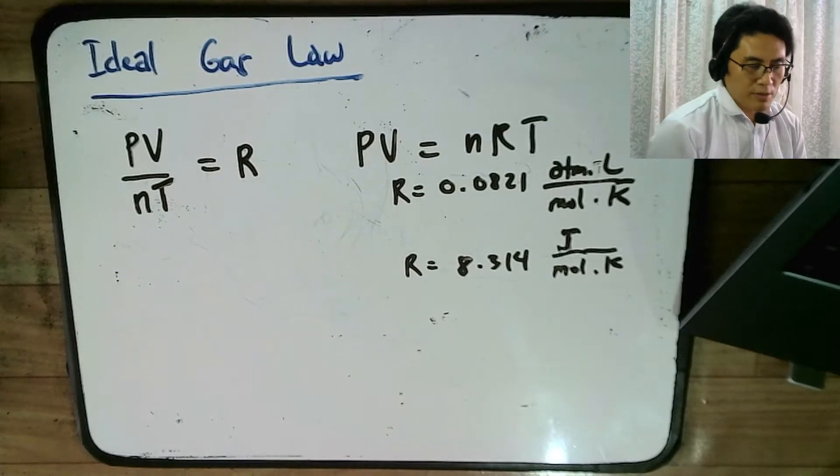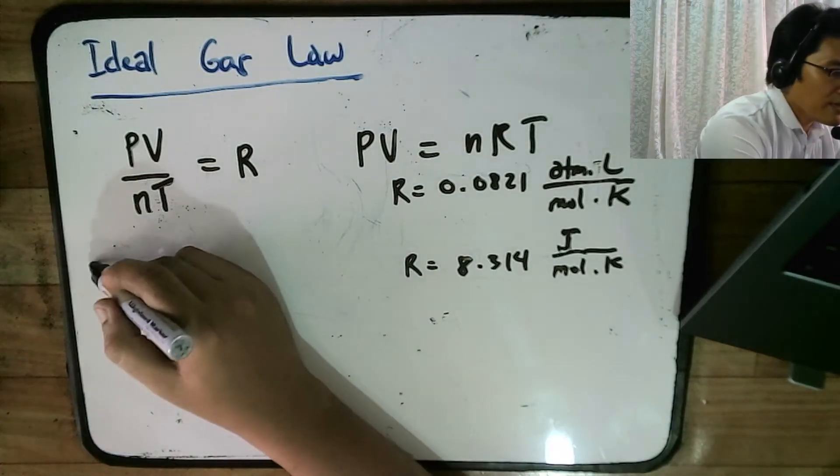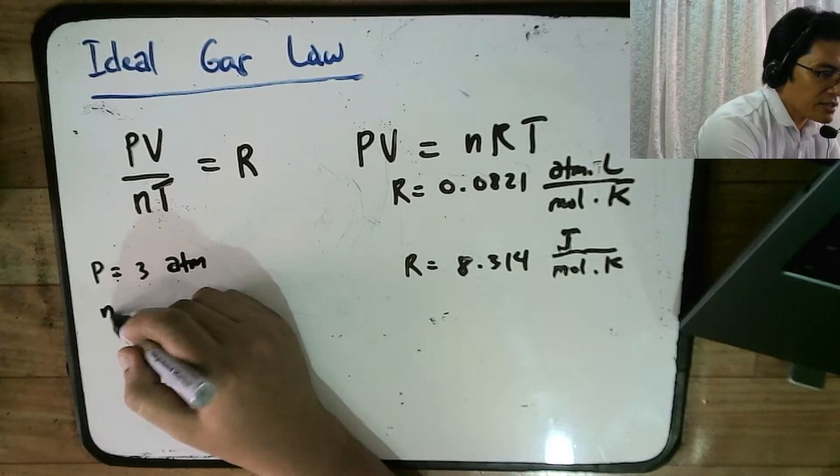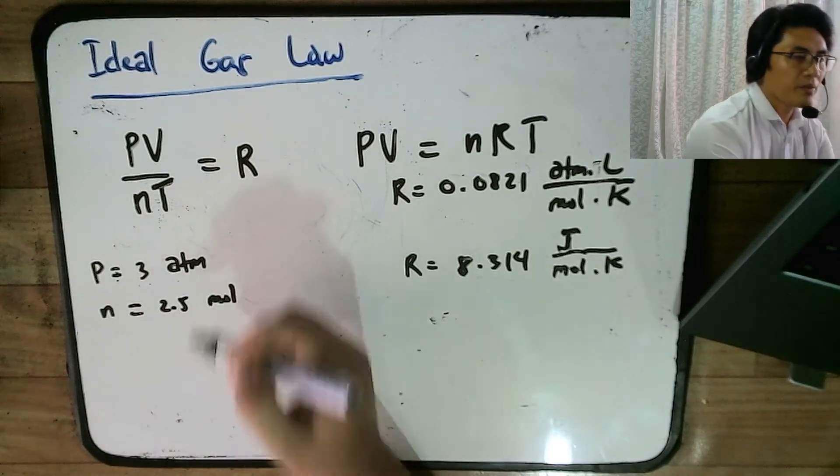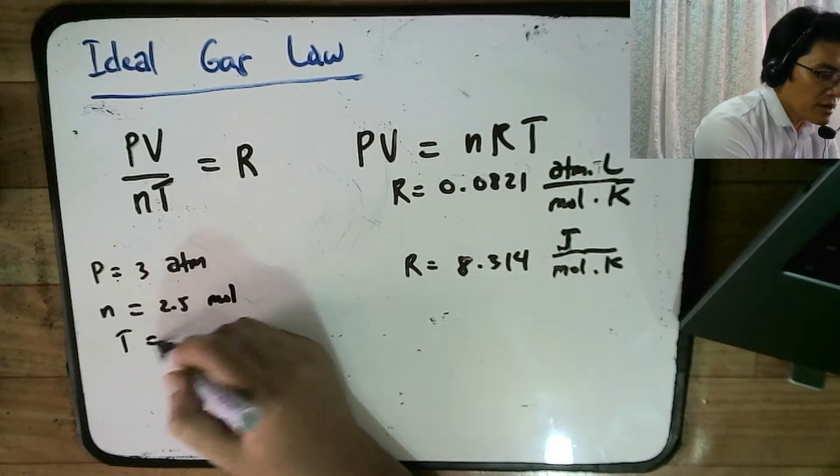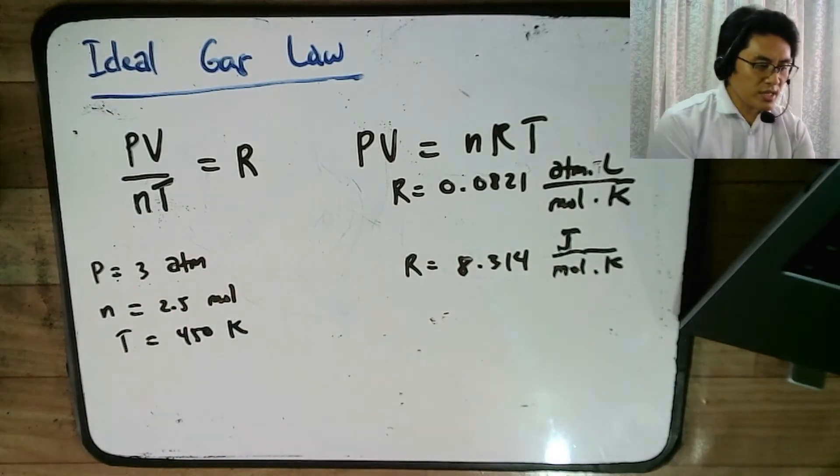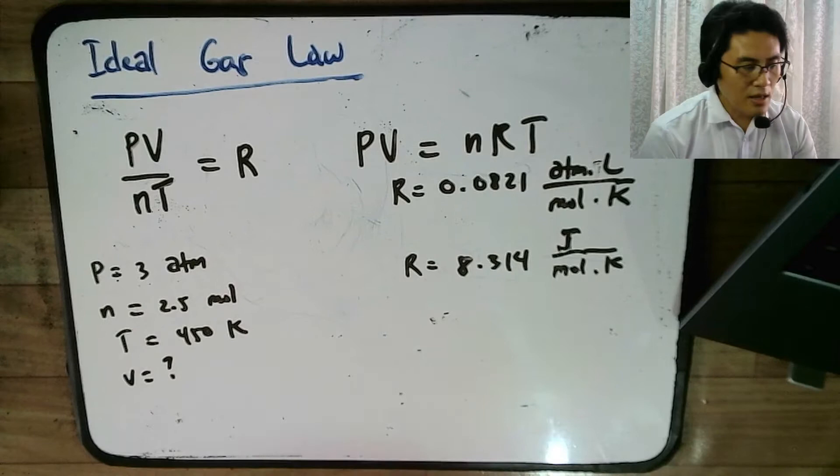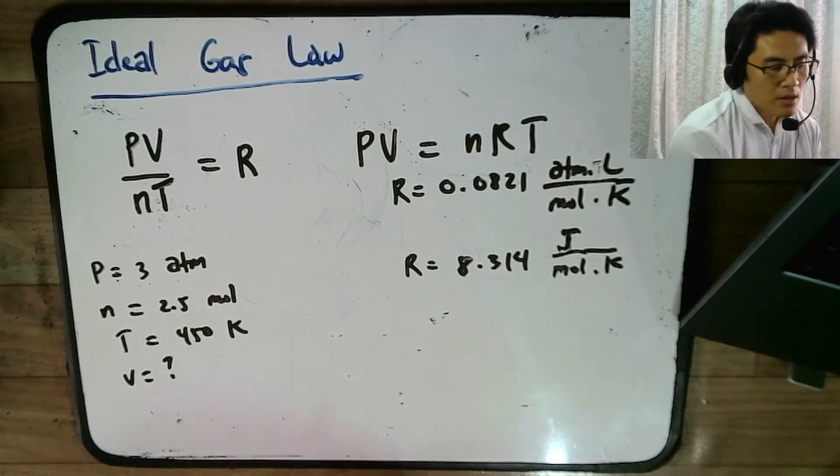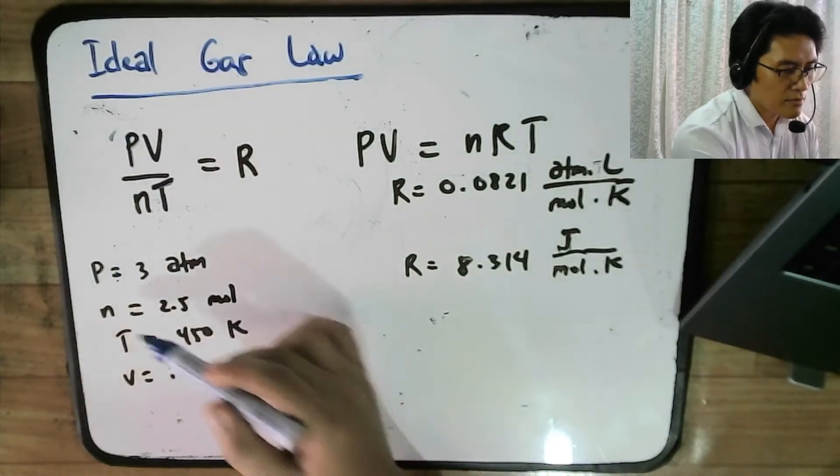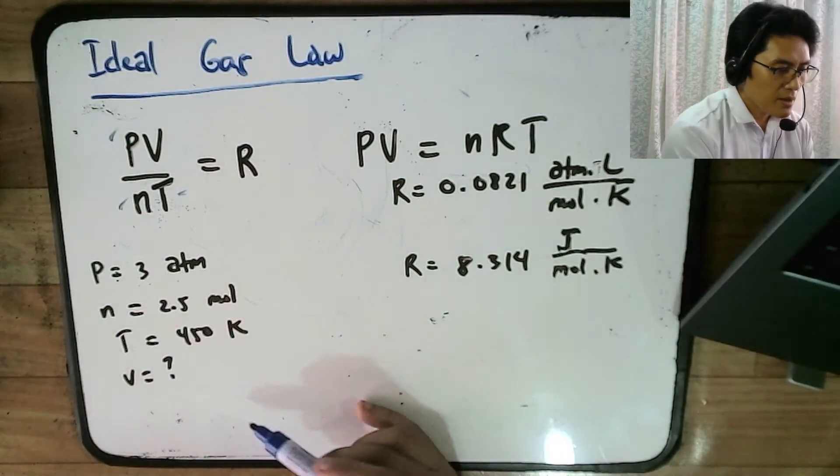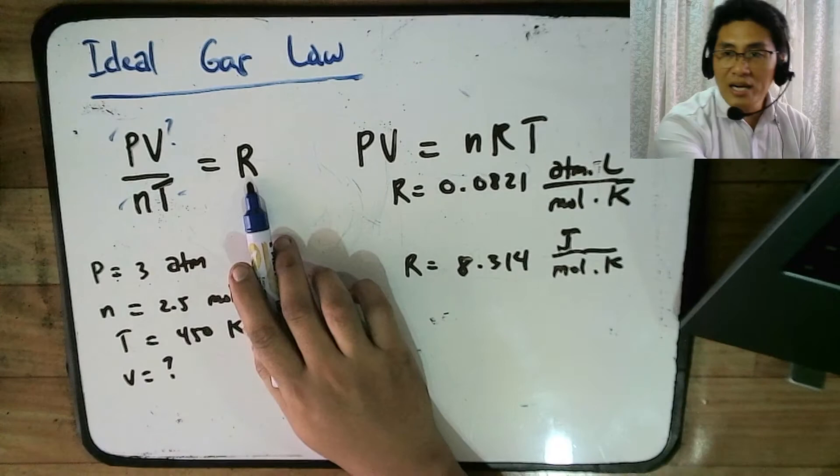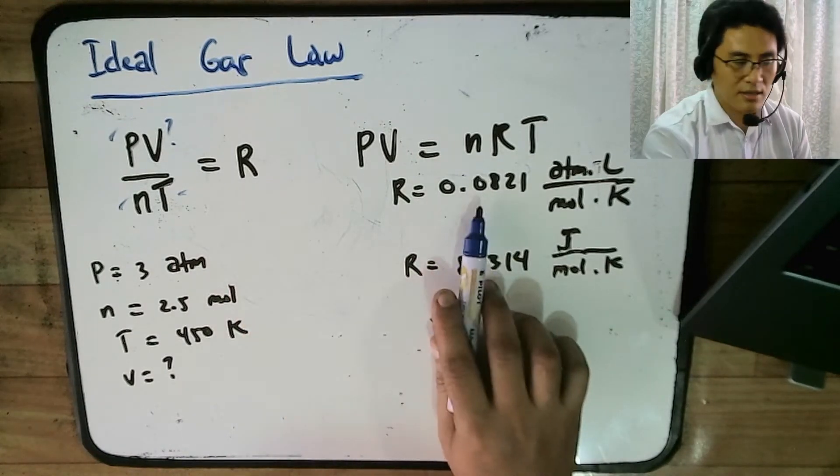So now, let's take some problems. Let's say you have a gas and the pressure of the gas is 3 atm, and its number of particles is 2.5 moles and then its temperature is 450 Kelvin. So the question is, how much will be the volume of the gas? So it's important to take note that P is given, N is given, T is given, V is what is asked, and R is a given because remember, it is a constant.